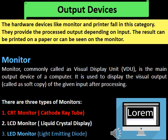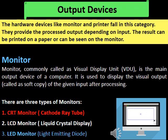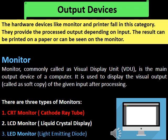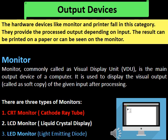Monitor, commonly called the visual display unit, is the main output device of a computer. It is used to display the visual output, called a soft copy, of the given input after processing. There are three types of monitor: first, CRT monitor — cathode ray tube; second, LCD monitor — liquid crystal display; third, LED monitor — light emitting diode.